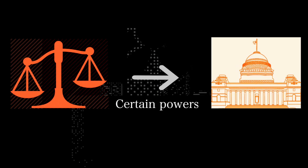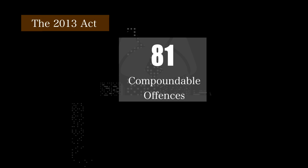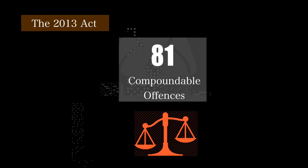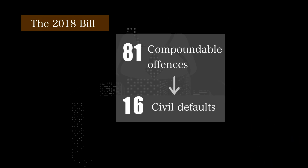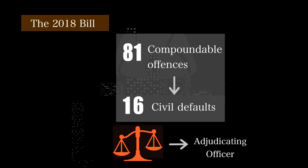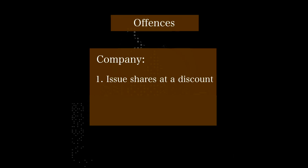The Bill shifts certain powers from the courts to the central government. For example, the 2013 Act contains 81 compoundable offences which are heard by courts. Compounding is a settlement process where the court can order the defaulting party to pay a compounding fee and settle the case. The Bill recategorises 16 of these compoundable offences as civil defaults, where adjudicating officers may now levy penalties instead. These offences include if a company issues shares at a discount or fails to file its annual returns.